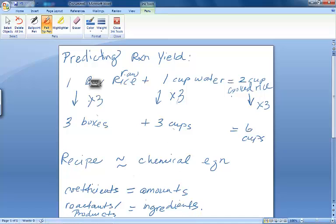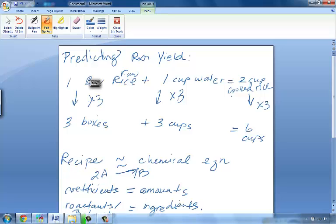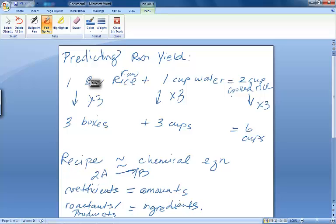This recipe is very analogous to a chemical equation, except in a chemical equation we have reactants and products which are basically your ingredients. And whatever coefficients you have, which represent your number of moles, those are your amounts. So instead of a box or a cup or a teaspoon, you're using these coefficients, which represent the number of moles. This is very similar to a recipe, where the reactants and products are your ingredients and your coefficients, in turn, are your amounts. But in what units? In mole units.